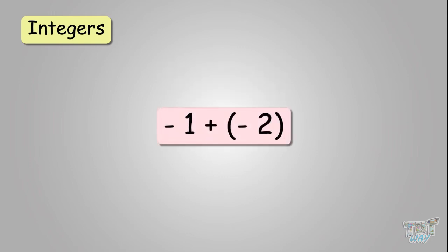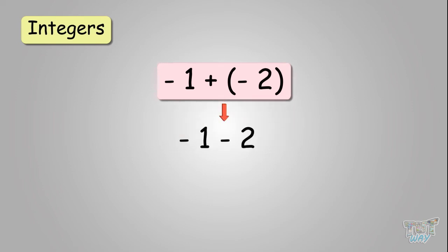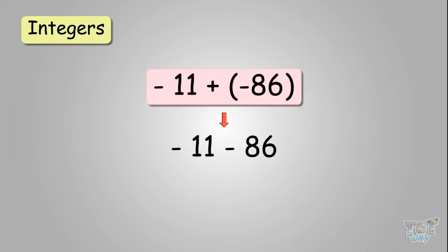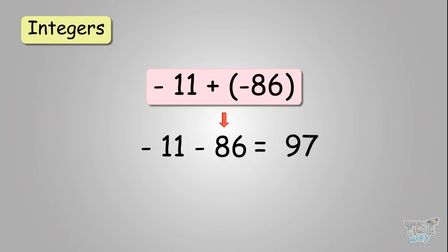Negative one plus negative two — remove the brackets. A positive sign and a negative sign is a negative sign, so it becomes minus one minus two. You add to get negative three. Negative eleven plus negative eighty-six — remove the brackets and combine to get negative eleven minus eighty-six. You add to get ninety-seven, and it becomes negative ninety-seven.